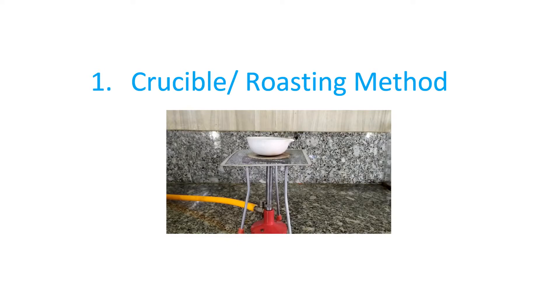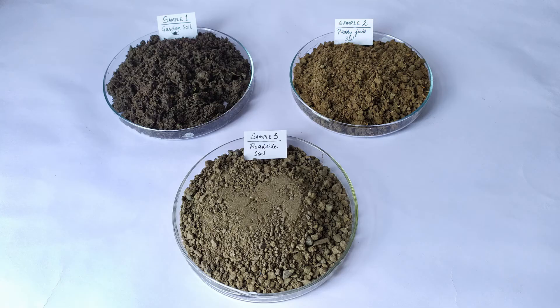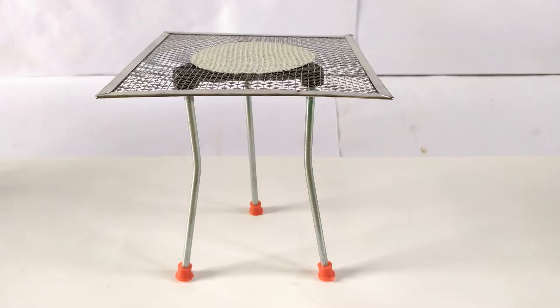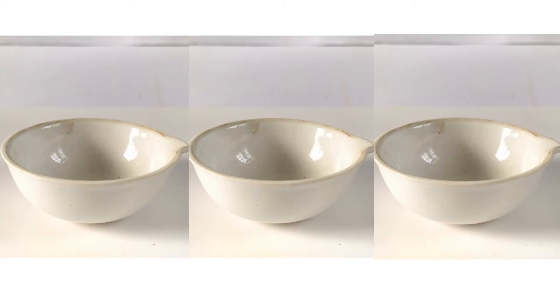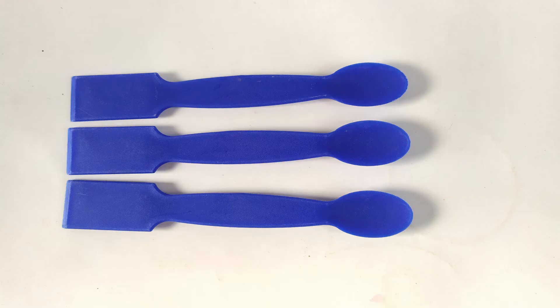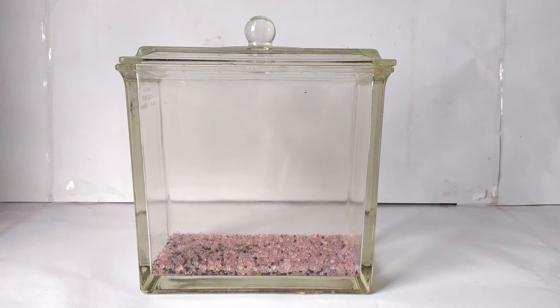For this experiment, we'll need the following: three soil samples taken from different locations — remove the larger pieces of stones and plant debris from the samples for accurate results; a Bunsen burner, spirit lamp, or hot plate; a pair of tongs; a tripod stand with wire gauge; three porcelain dishes or crucibles; a weighing scale accurate to at least 1 gram — you can also use a pocket digital scale; three spatulas or spoons; and a desiccator containing a suitable desiccant.